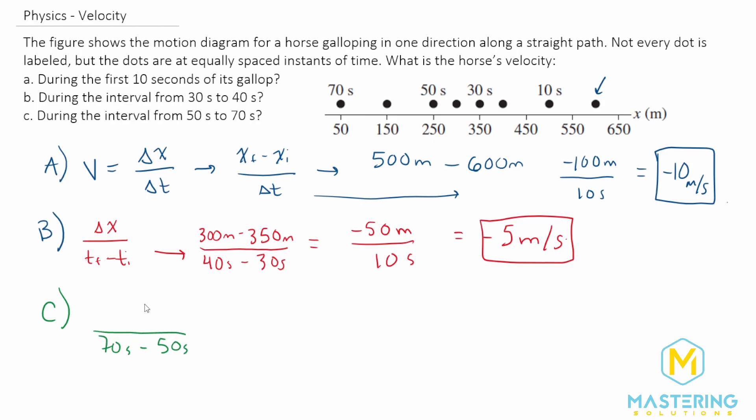So we have a change in 20 seconds. And then at the final where it ends up is 50 meters minus where it started out at 250 meters, gives us negative 200 over 20 seconds.